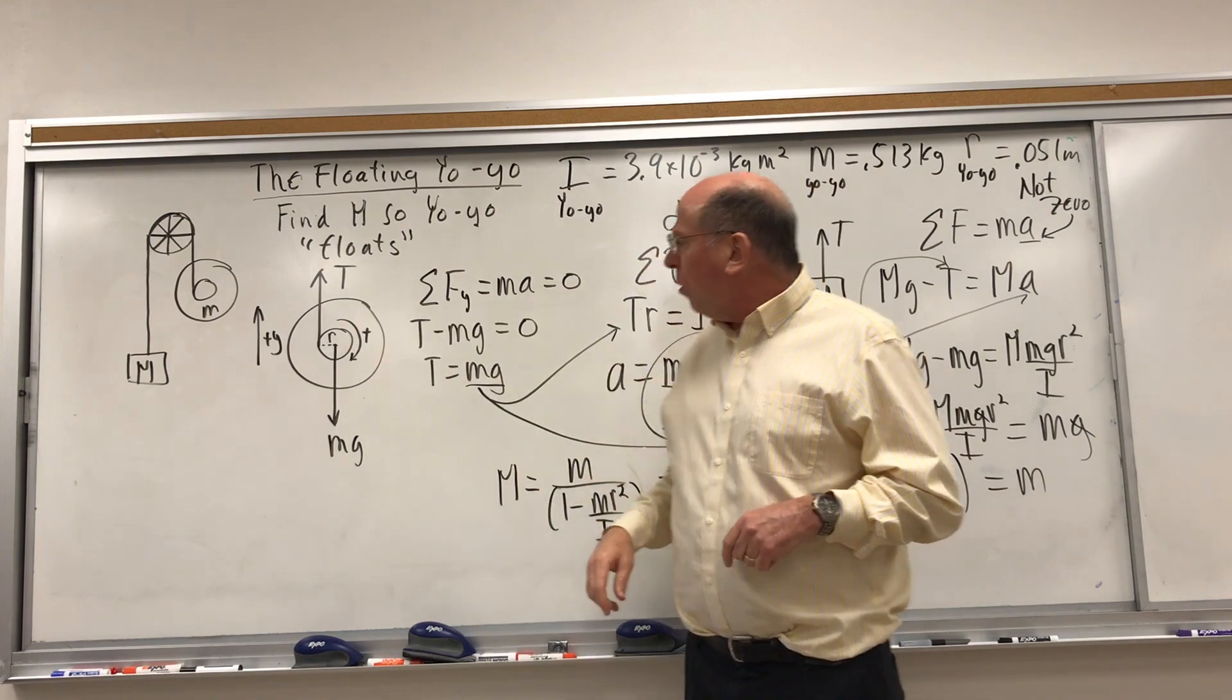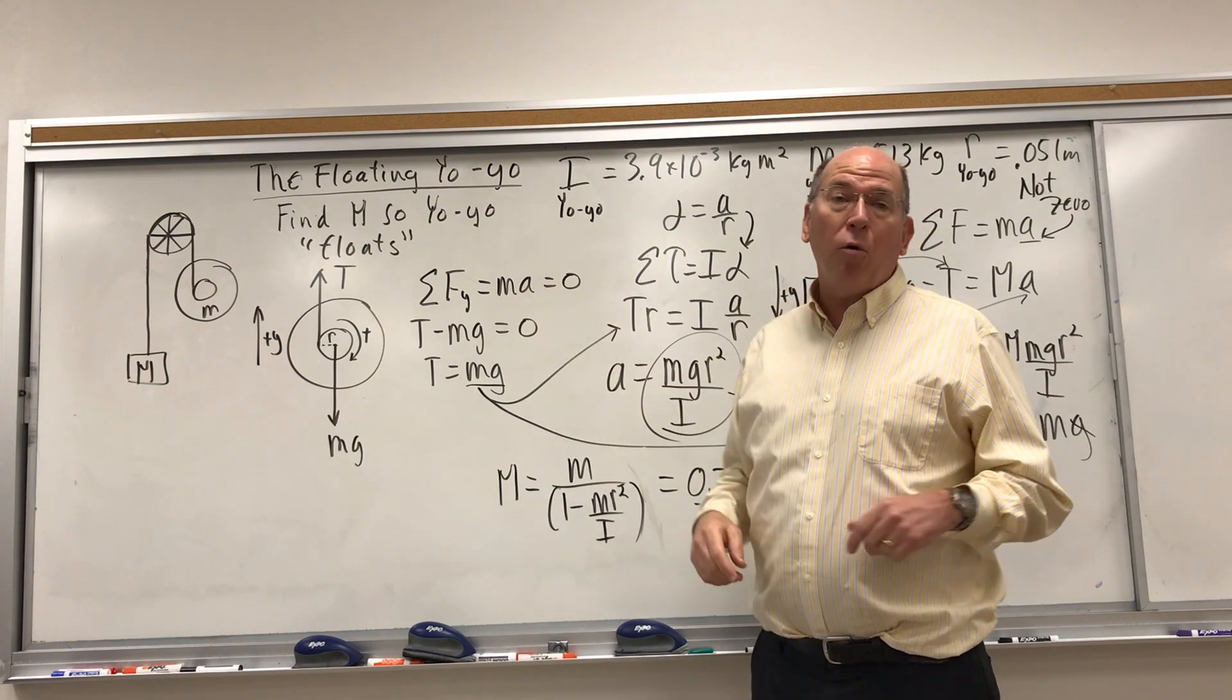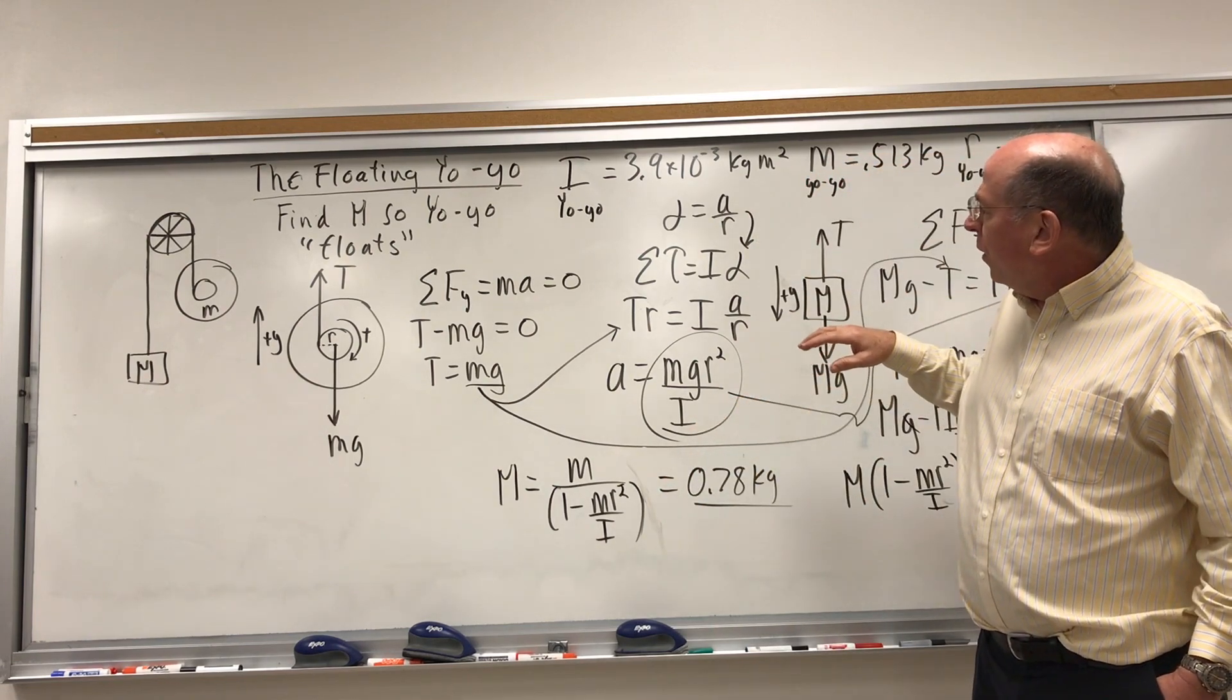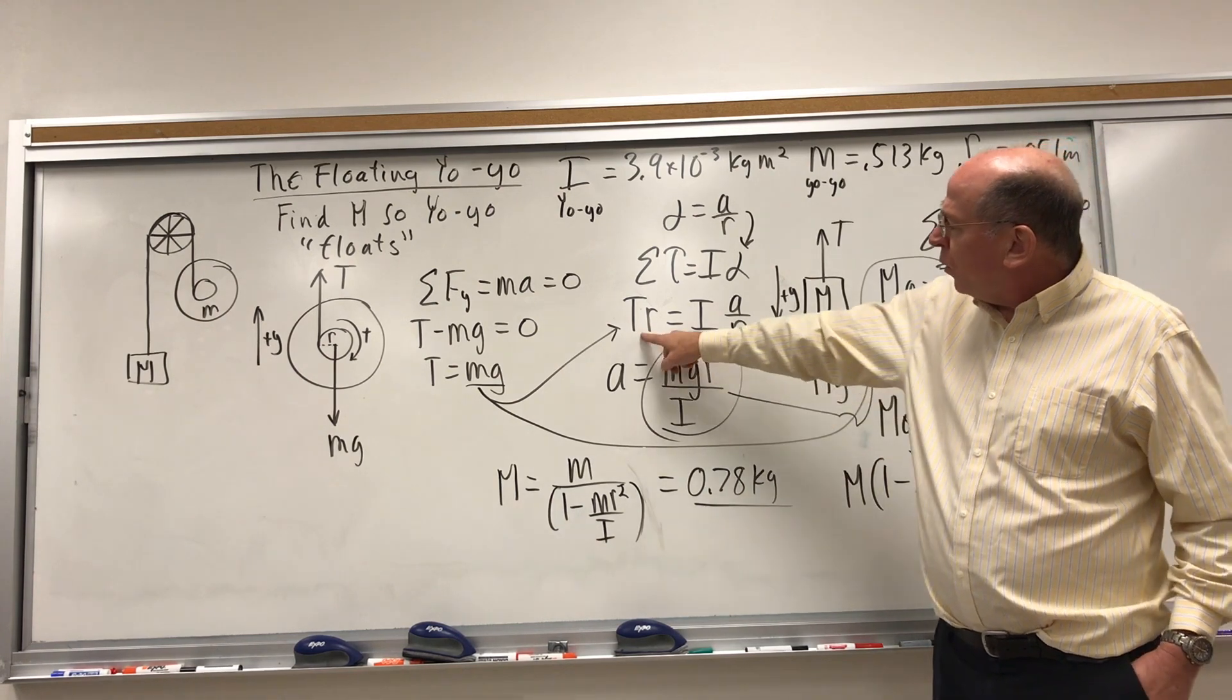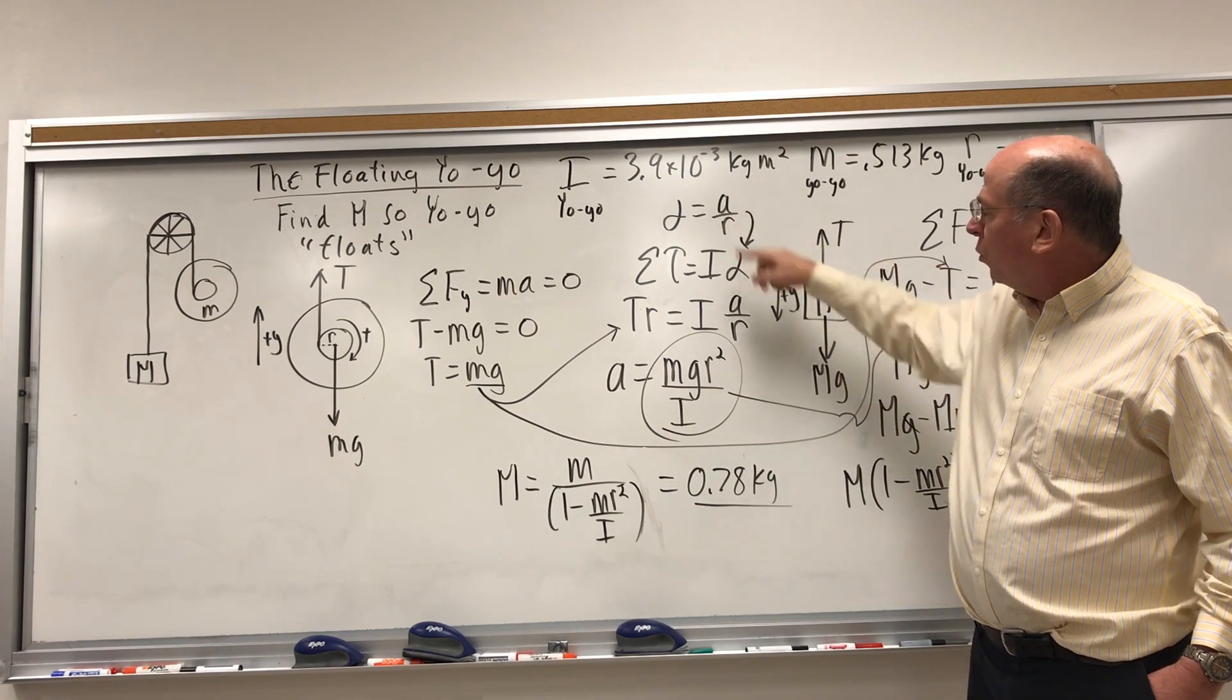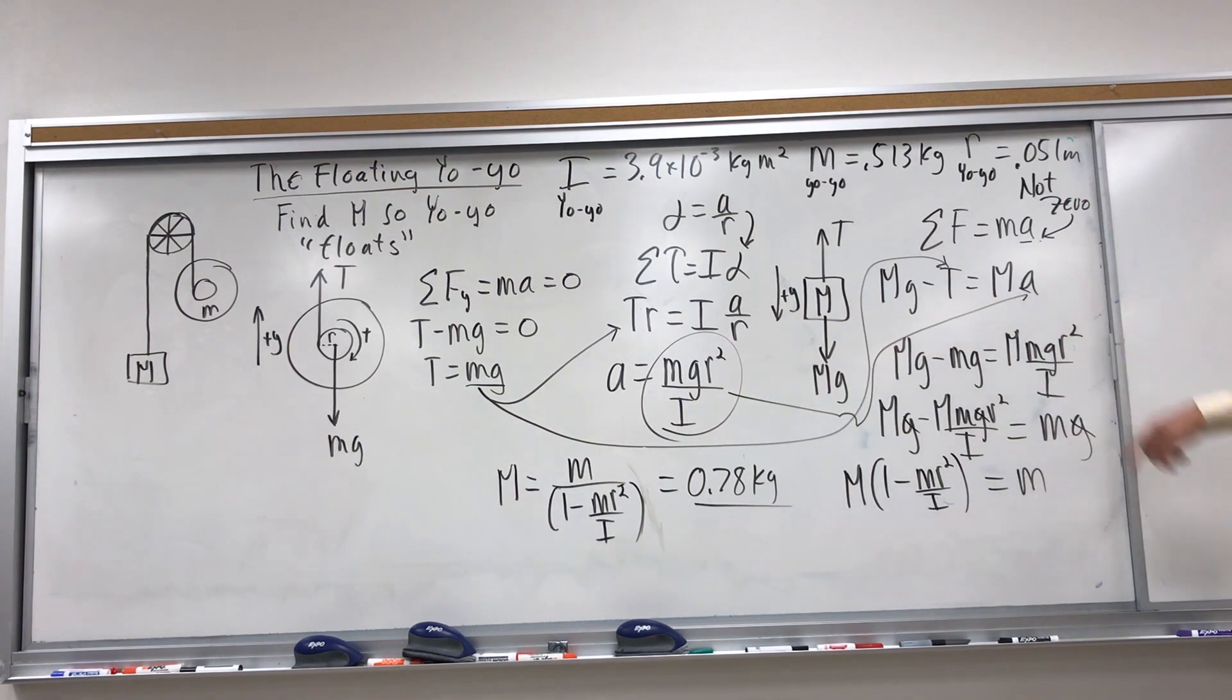Free body diagram of the yo-yo—the key thing is the acceleration of the yo-yo will be zero if we're successful, so the tension equals the weight. Then sum of the torques equals I alpha. The torque is from the tension if we're summing about the center, and then I is given and alpha is the acceleration over the radius. Then solve that for the acceleration and substitute it in. Then you have some fun algebra to do. The key thing is to know what your unknown is.